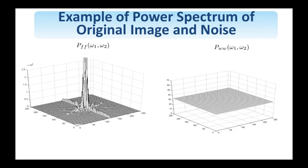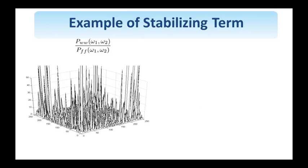Let us look at some experimental results. We show here the power spectrum of the cameraman image. The (0,0) value is quite high and outside the scale of the figure, and it has this decaying nature that we mentioned earlier, and it's also non-negative. Here we show the spectral density of the noise — it's white noise, therefore its spectrum is flat. This spectrum is not computed from the image, but since it's a synthetic experiment, we know exactly what the variance of the noise is, and that's what we show here.